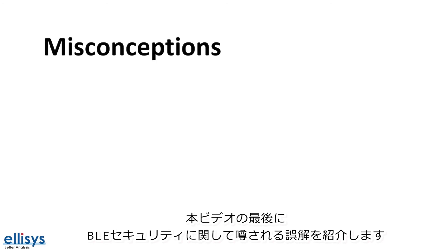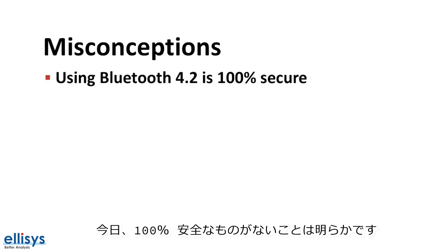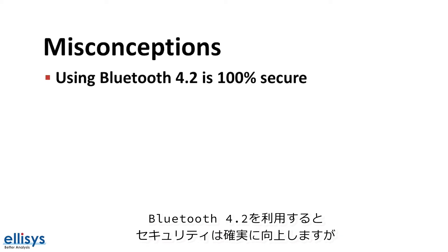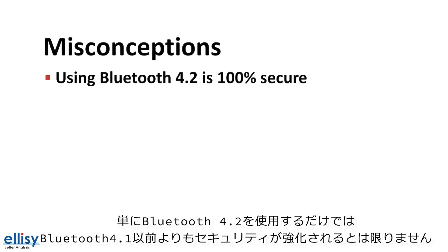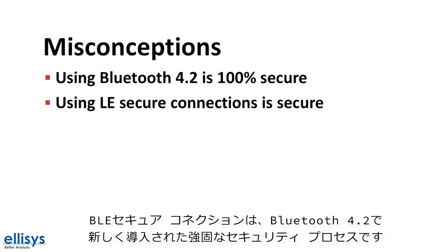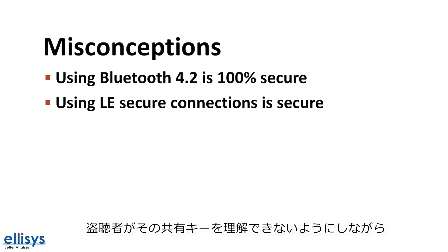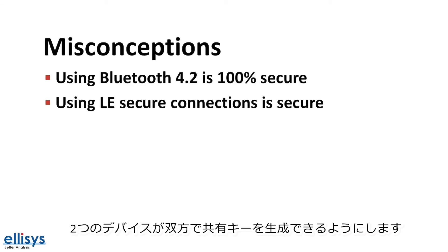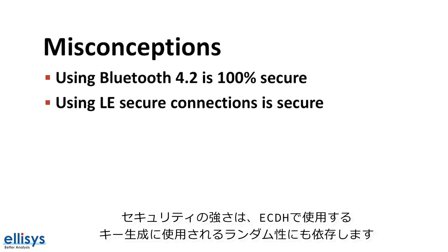Finally, let's talk about some misconceptions regarding BLE security. The first is that using Bluetooth 4.2 is 100% secure. There is no such thing as 100% secure, and while Bluetooth 4.2 improves security, there are different levels within it — simply using 4.2 does not guarantee enhanced security over version 4.1 and earlier. The second misconception is that using LE Secure Connections is secure. LE Secure Connections, introduced in Bluetooth 4.2, utilizes the Elliptic Curve Diffie-Hellman algorithm, which allows two devices to generate a shared key while preventing an eavesdropper from determining it. However, utilizing this does not necessarily guarantee high security — the strength also depends on the randomness used to generate the keys.